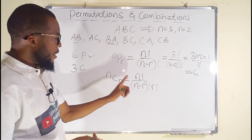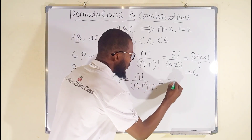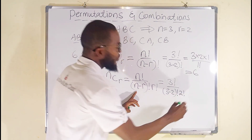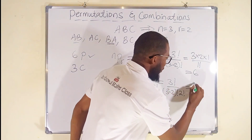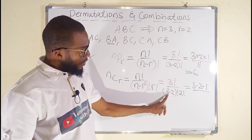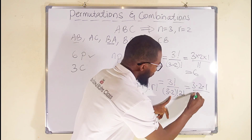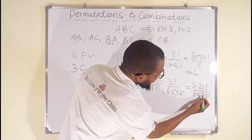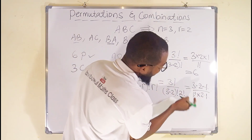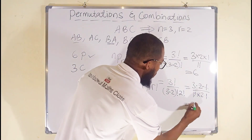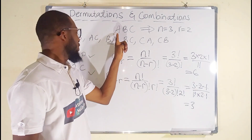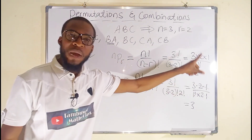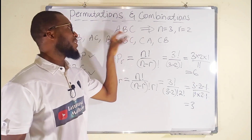For combination: nCr = 3! / [(3−2)! × 2!] = (3×2×1) / (1! × 2×1) = 6 / (1×2) = 6/2 = 3. The 2 in the numerator and denominator cancel, leaving 3 divided by 1, which equals 3. So we have 3 combinations when choosing 2 out of 3 items from A, B, C, confirming our earlier count.